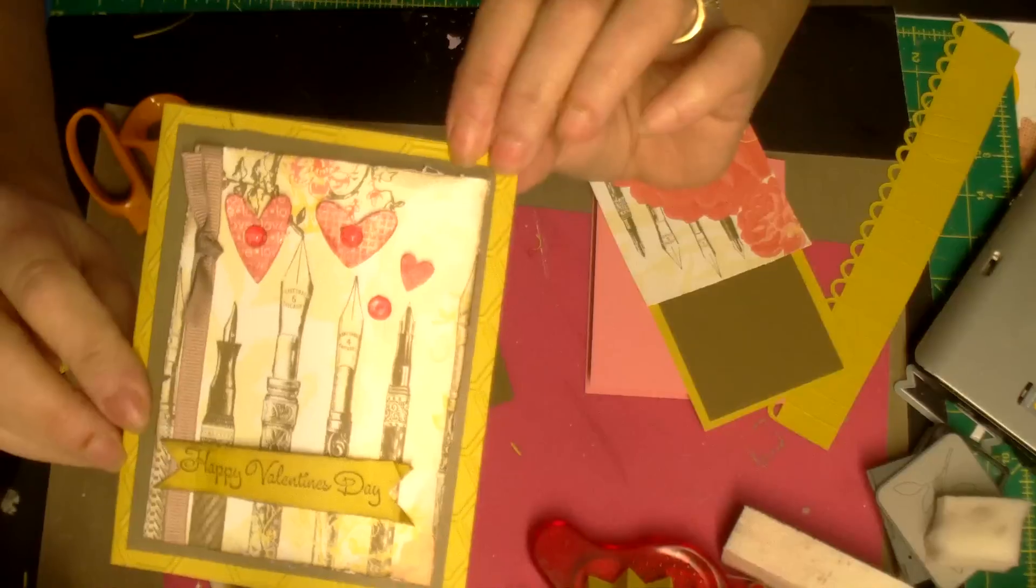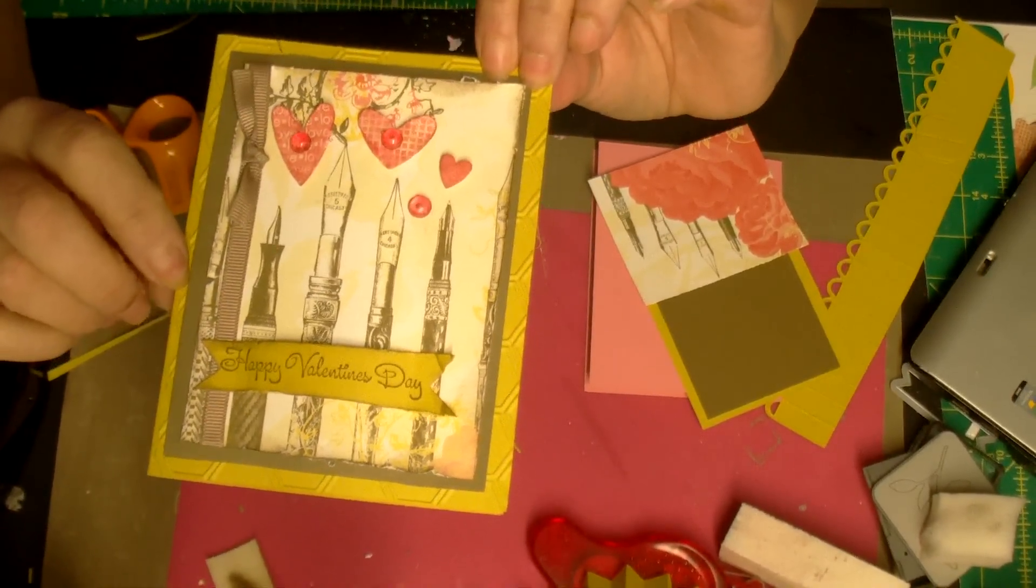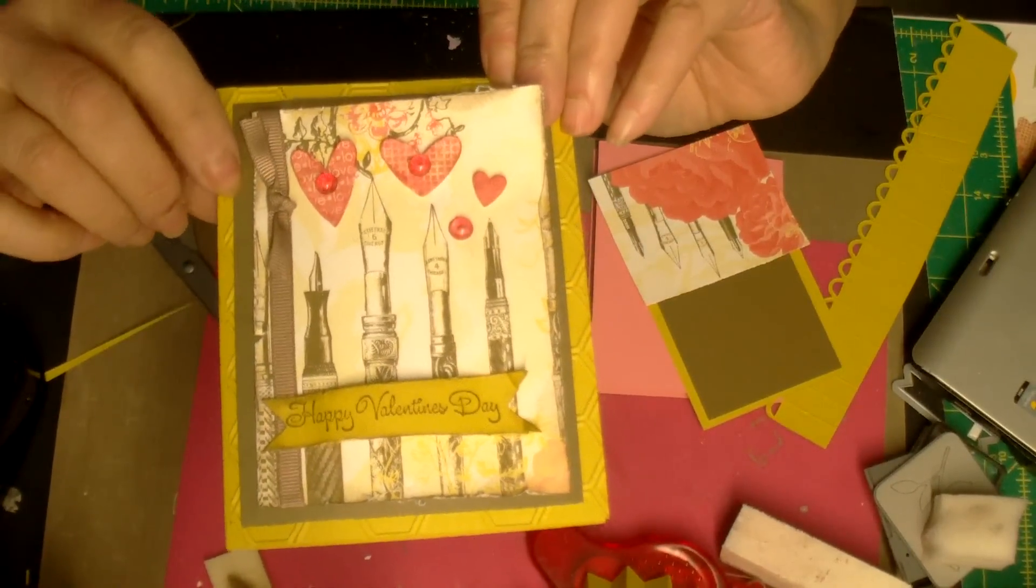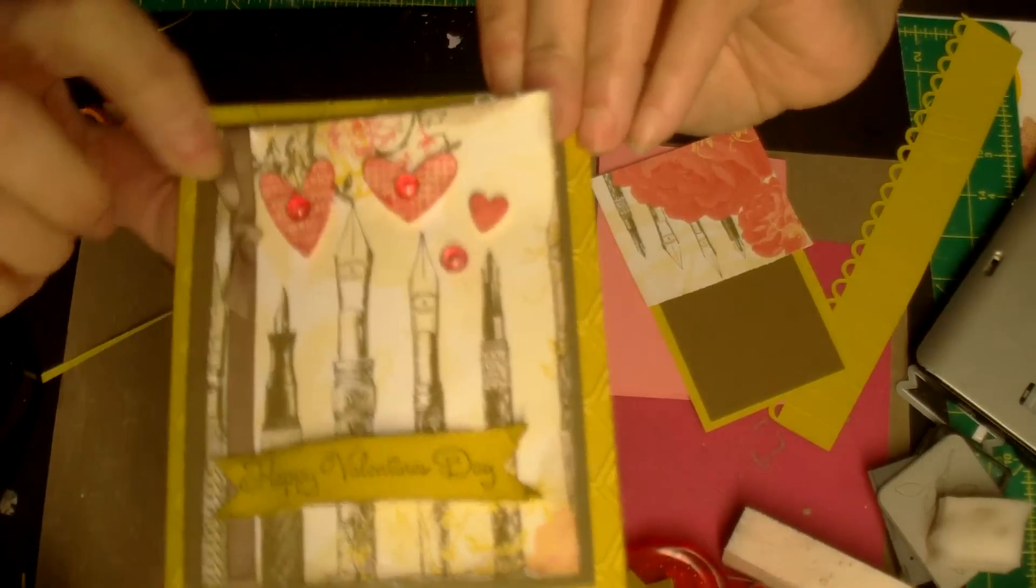Look how pretty this card is. I did it with the summer starfruit, this color right here, so cute, and this soft suede chocolate chip looks like a brownish color but it's not.